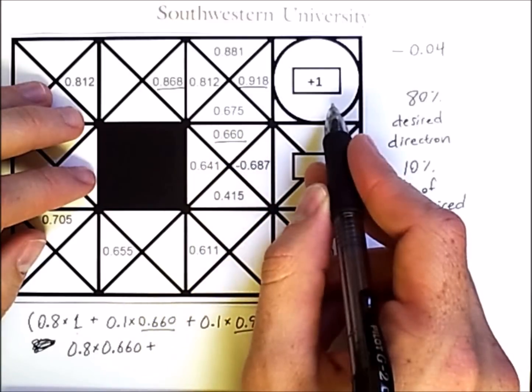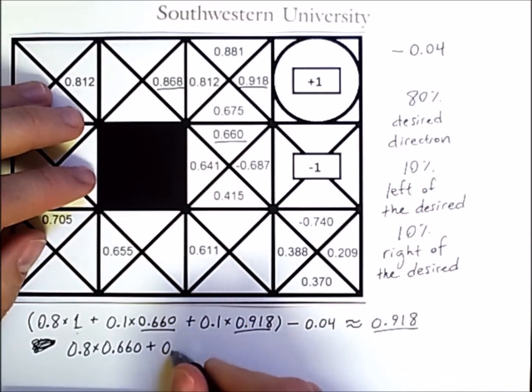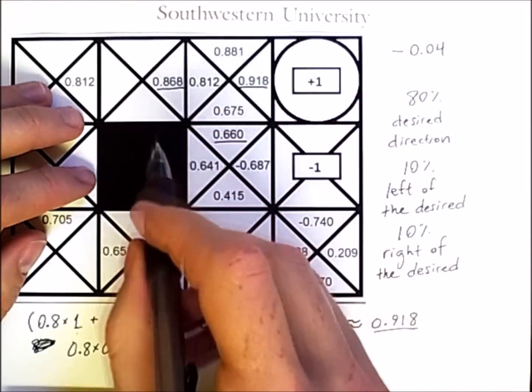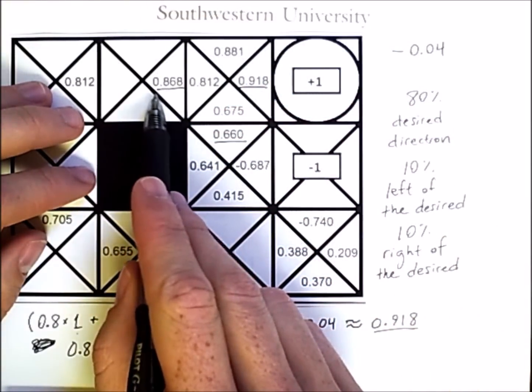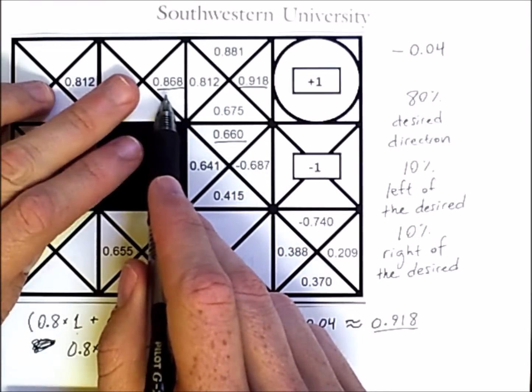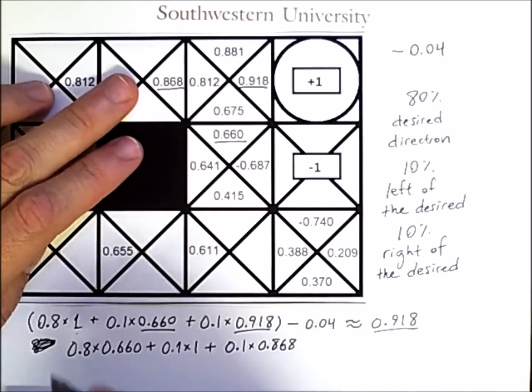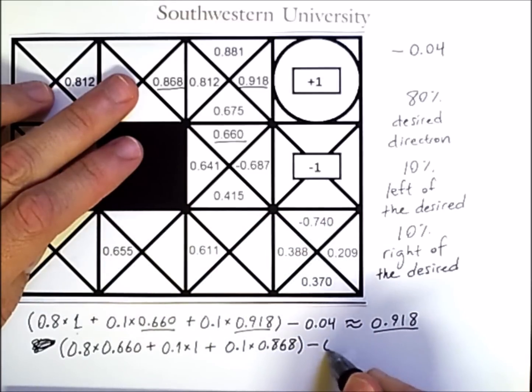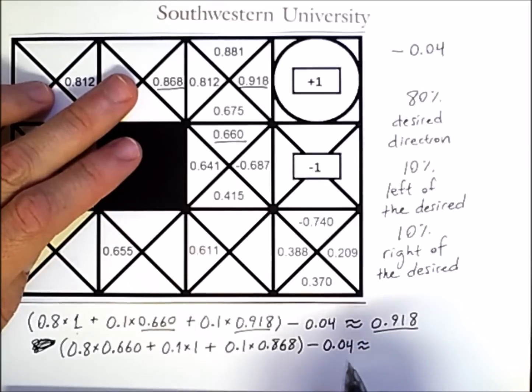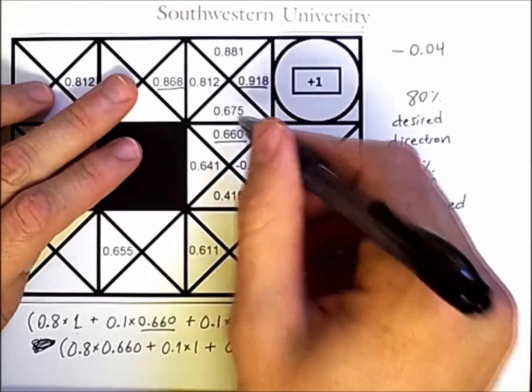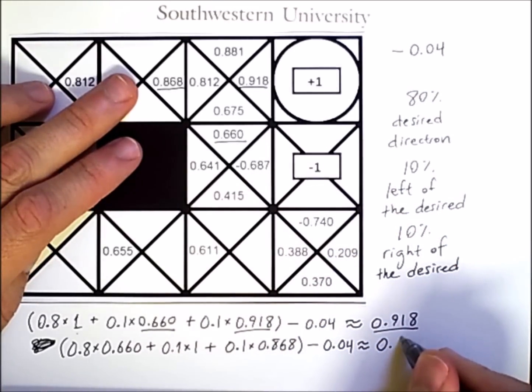So it's a value of 0.66. There's also a 10% chance that I will immediately get the plus one reward and a 10% chance that I'll move this direction and then have to follow the policy again, which the policy says to move right, and so that action in this state has a value of 0.868. And all of those actions have movement penalty associated with it. So this expression turns out to be 0.675.